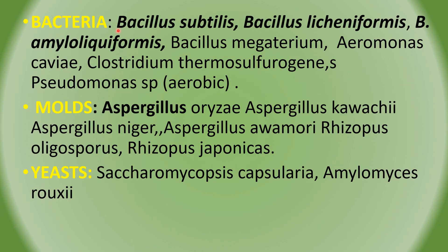Microorganisms used in the production of amylase are bacteria, molds (fungi), and yeasts. Among bacteria, there are several species of Bacillus, Aeromonas species, Clostridium species, and even Pseudomonas species. But Bacillus species like subtilis, licheniformis, and amyloliquefaciens are most important. Among the fungi, Aspergillus oryzae, Aspergillus covaceae, and Mucor are also used for the production of amylase, including Rhizopus species, Psychromycopsis capsularis, and Amylomyces covaceae.